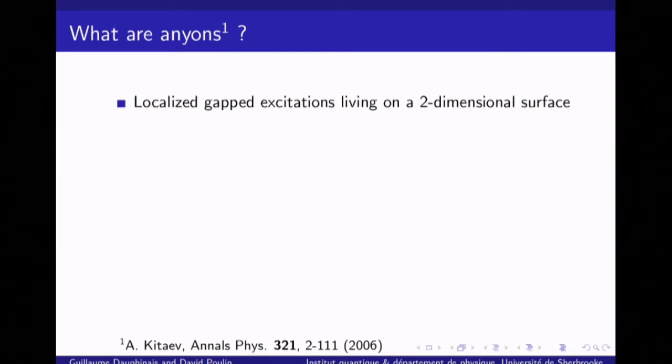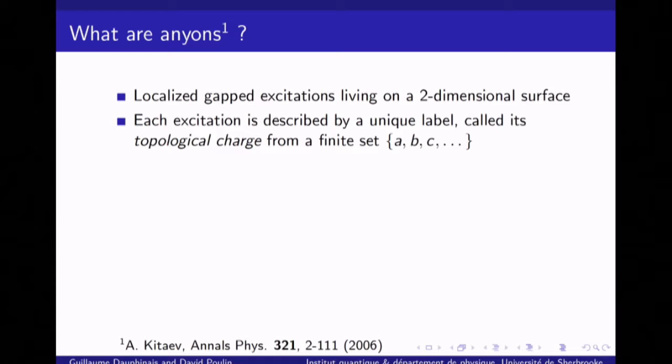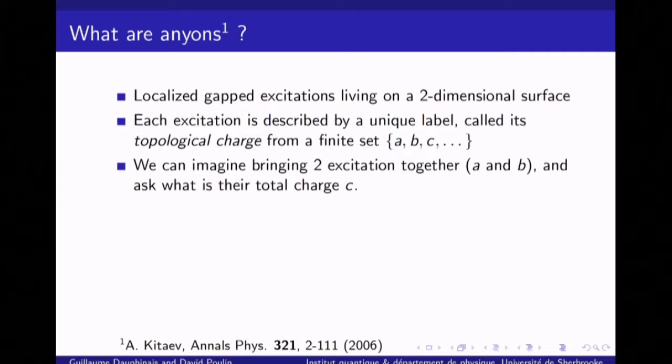We're going to work on a two-dimensional surface evolving in time. This system is characterized by excitations which are localized in space with well-defined positions. They are gapped, meaning there's an energy cost associated with creating them. Each excitation can be assigned a label called its topological charge, and there's a finite set of labels depending on the model. The charge one or vacuum is just the absence of excitation, and these labels cannot be modified by any small local operators.